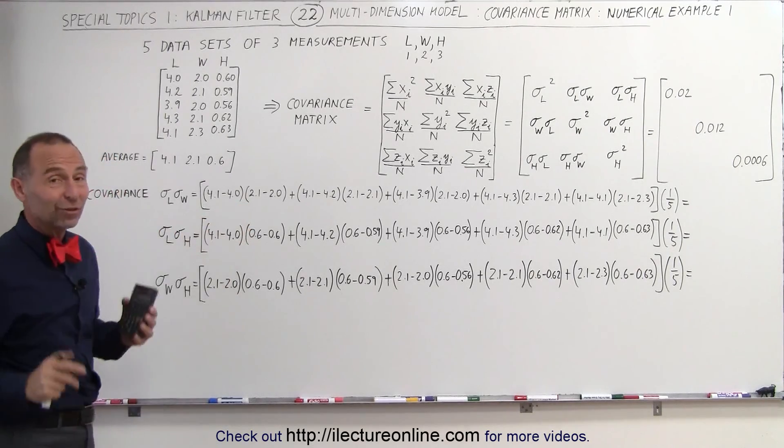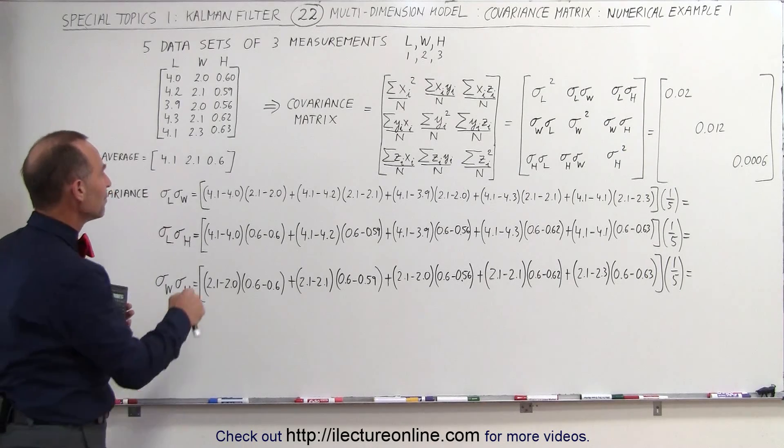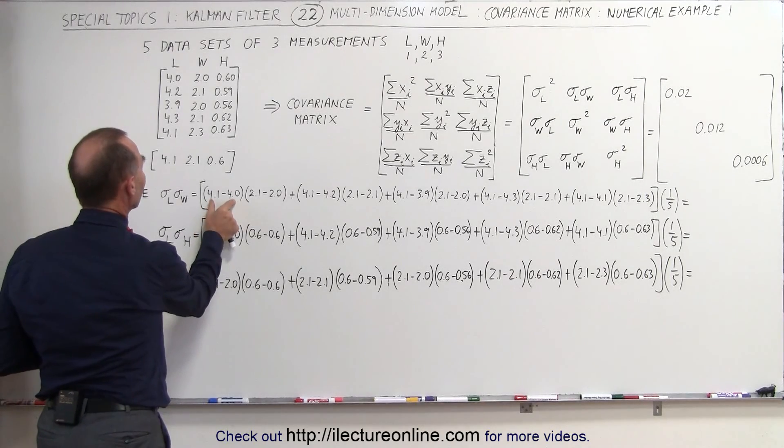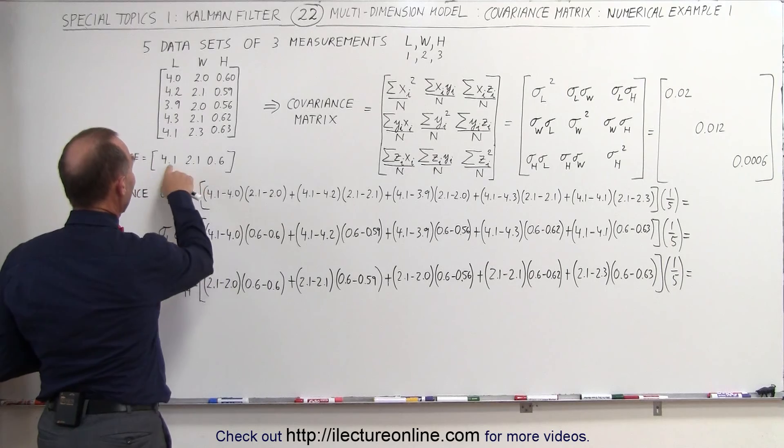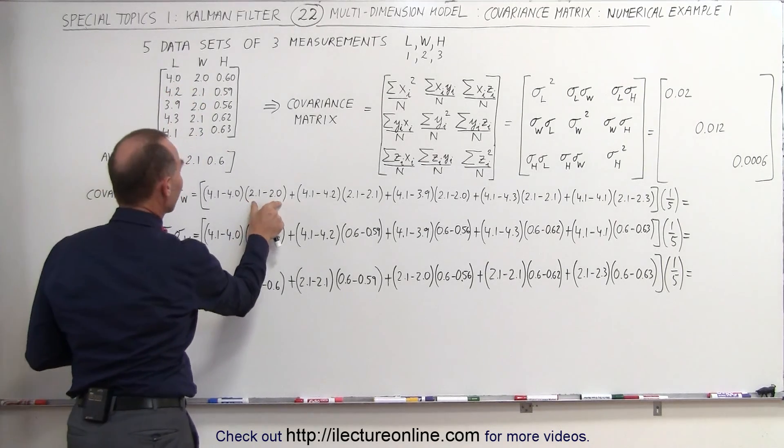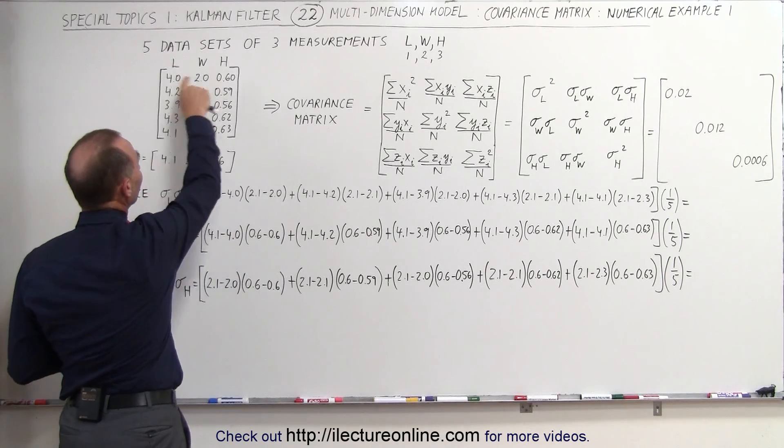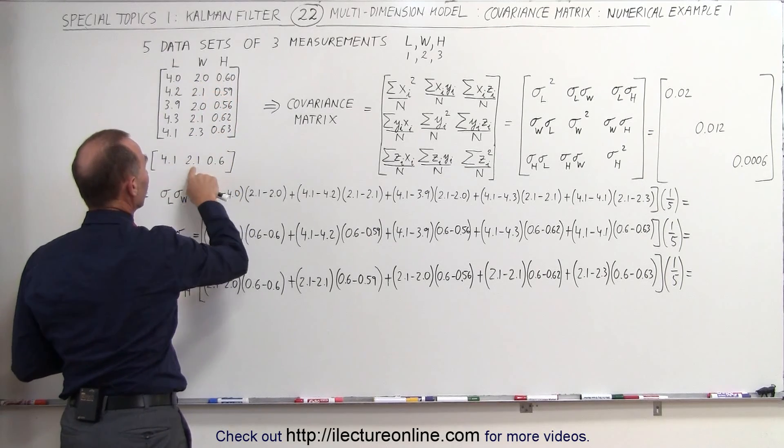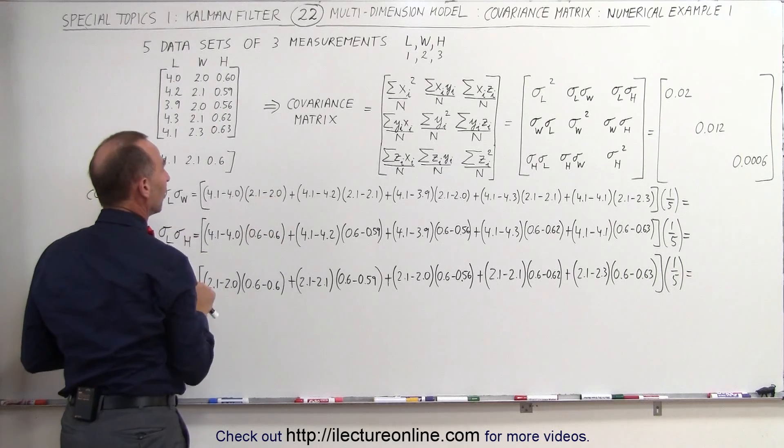I've already written down the equations how to do that, we'll go over it very quickly. So here would be the variance of the length, 4.1 is the average value, 4.0 is the first reading. We multiply times the variance of the width of the same set of readings. Here the average is 2.1 and the reading here is 2.0.